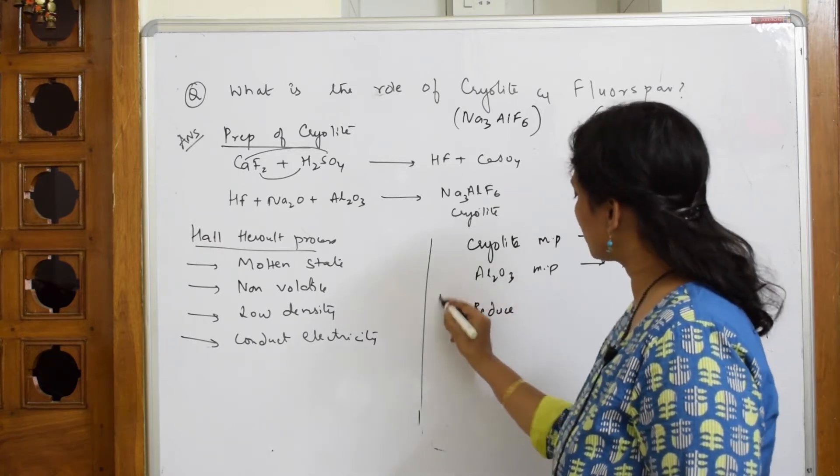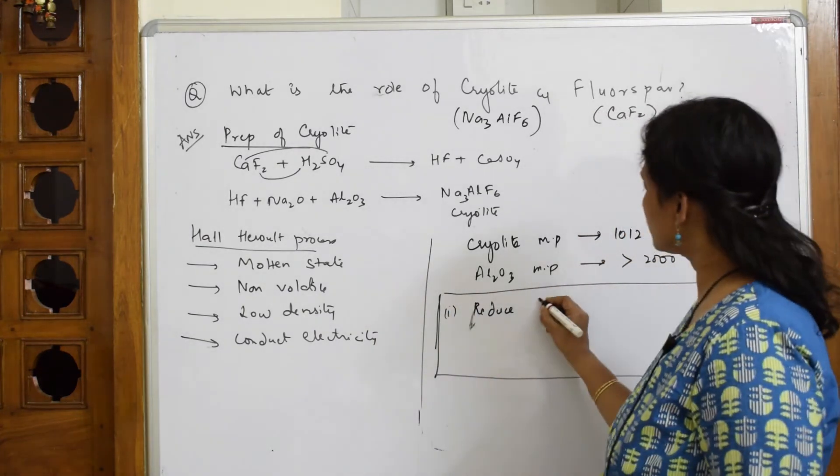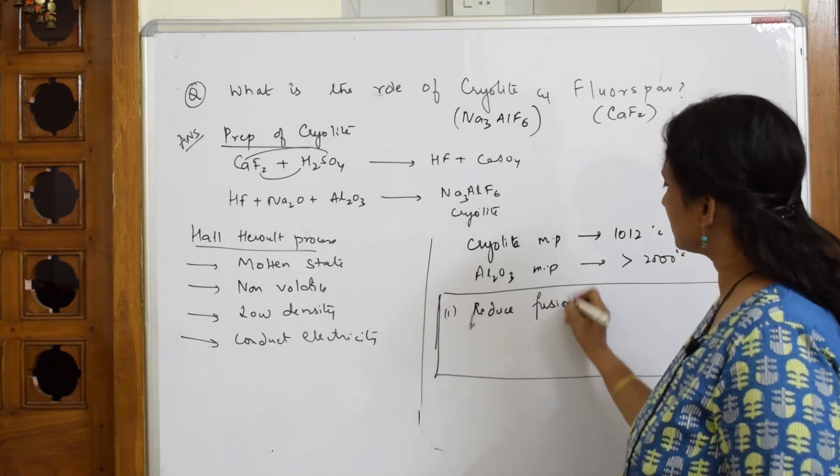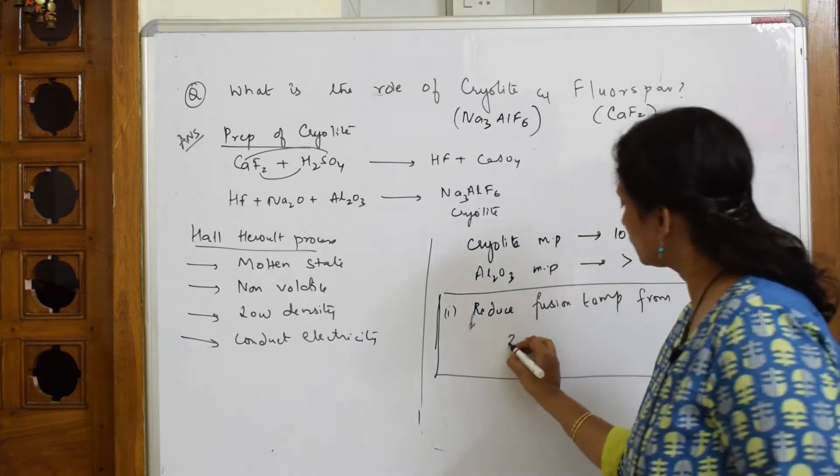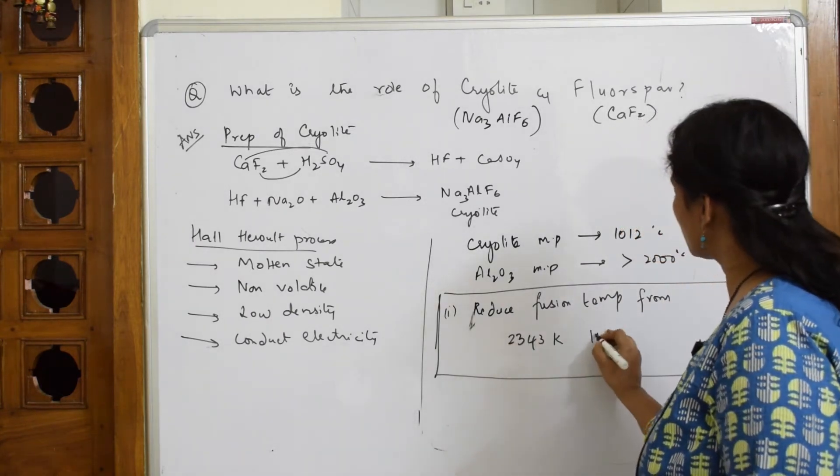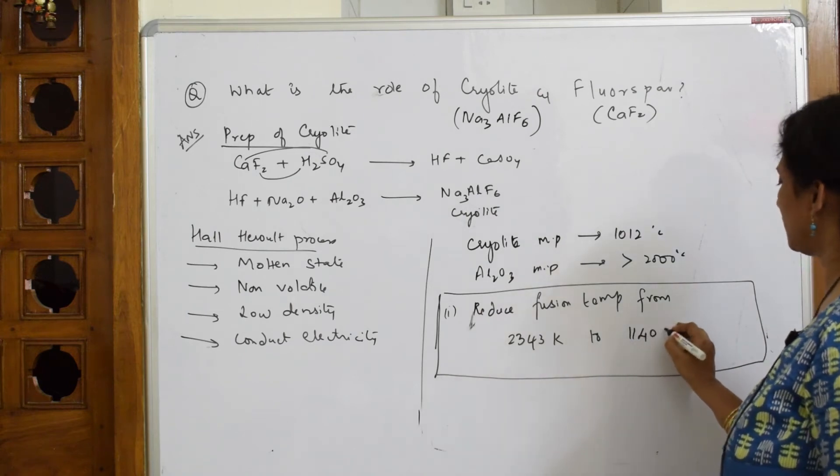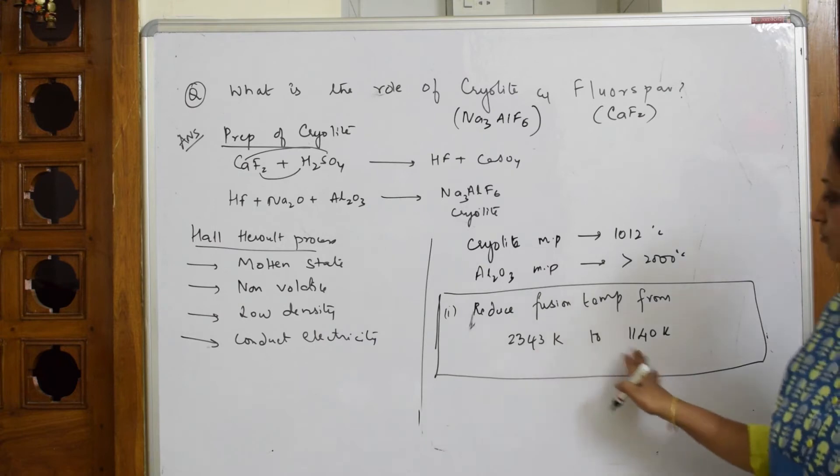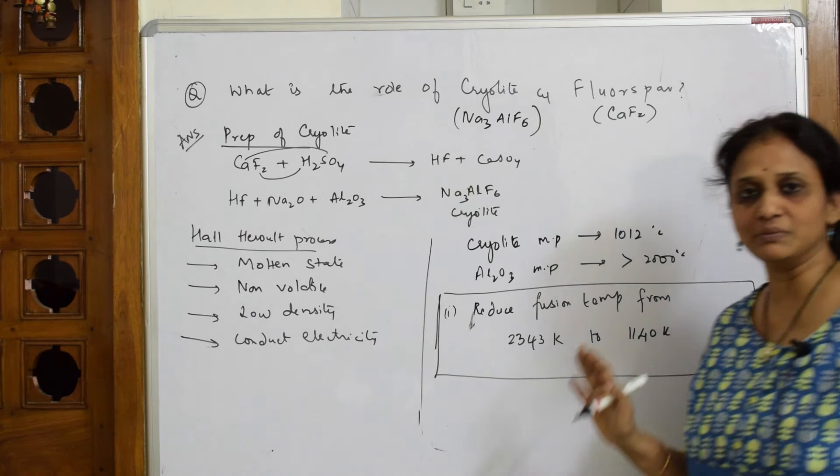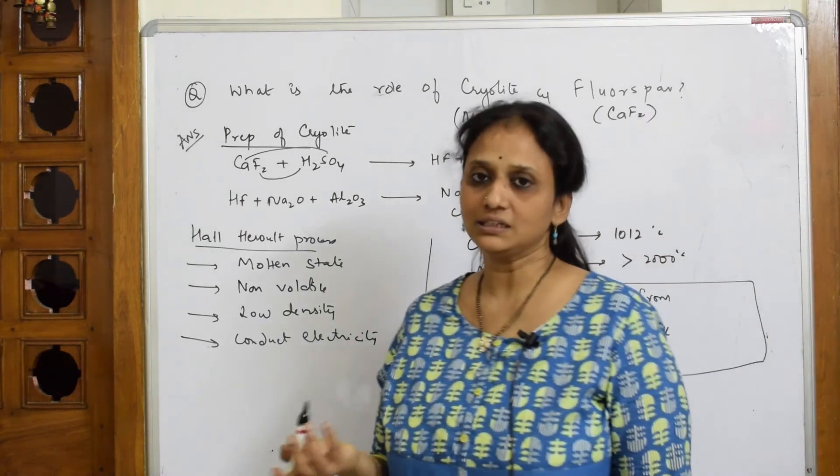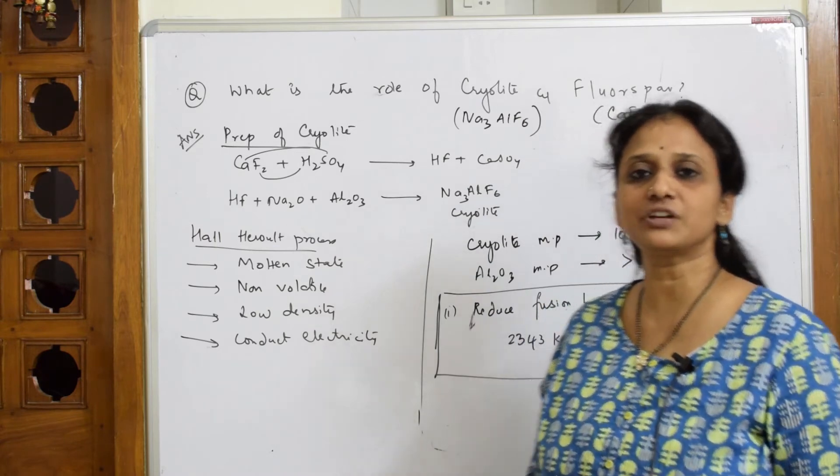What happens when you are adding or fusing cryolite with aluminium? First important thing, cryolite starts or it will reduce the fusion temperature. First important function, this is where your answer lies. It is going to reduce fusion temperature. Fusion temperature from 2343 Kelvin to almost 1140 Kelvin. So much is the difference. It is going to completely drop down the temperature so that the metal does not melt in that particular temperature in the electrolytic cell.